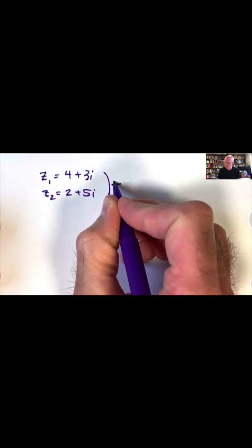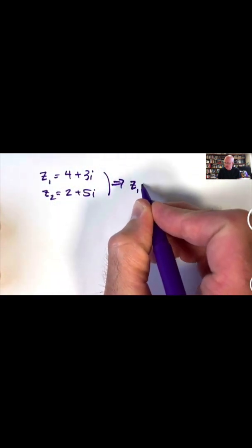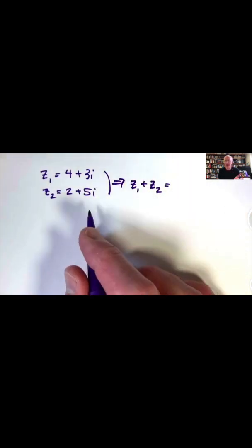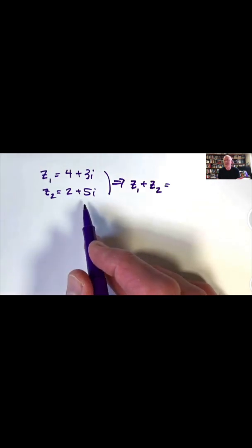We're wondering, what does it mean to add Z1 and Z2? What should we get? The simplest thing to try is to ignore the fact that i squared equals negative 1 and treat these as two linear polynomials in i, and add like terms.